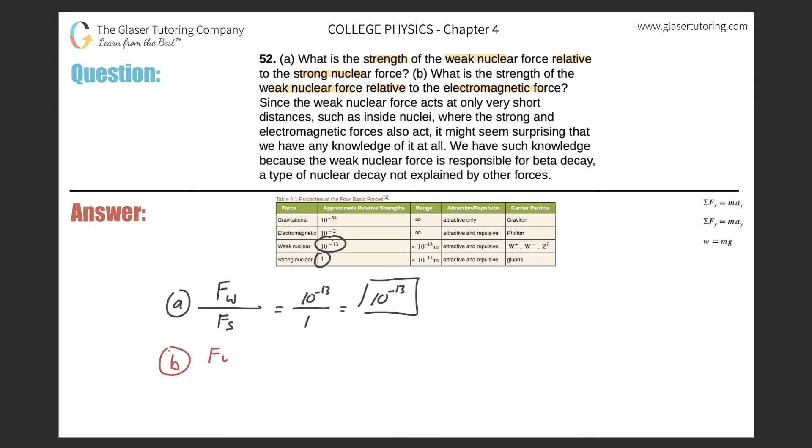So now we're comparing the strength of the weak nuclear force to the gravitation, oh excuse me, to the electromagnetic force. So I'll say F sub E.